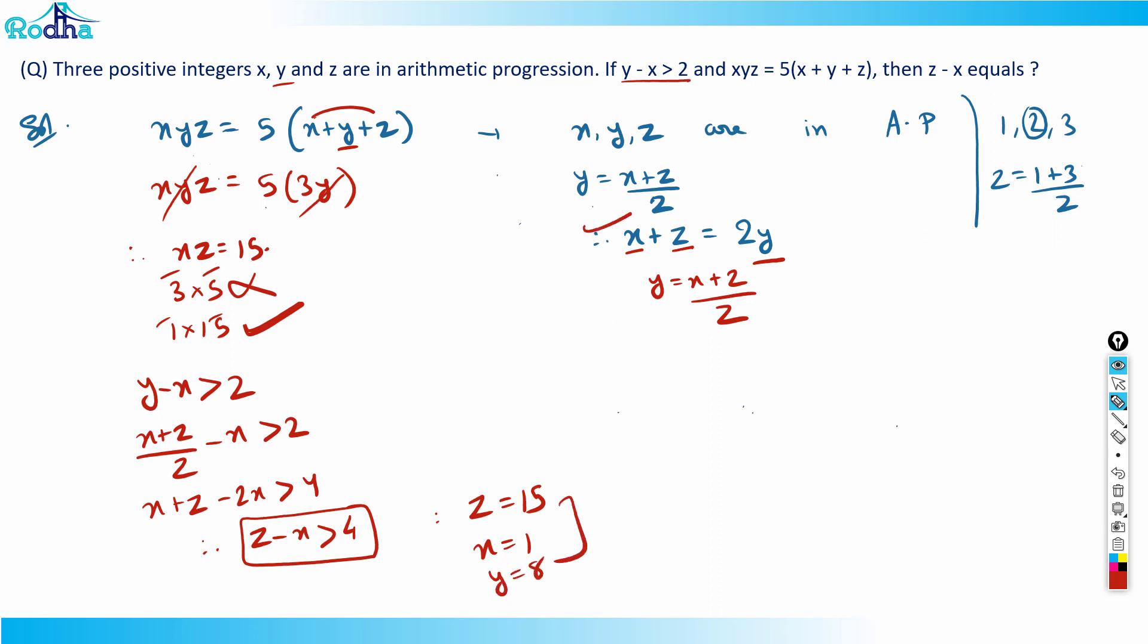What I need to find here is the value of z minus x. So z minus x would be 14. So 14 would be the answer. That's the question, thank you.